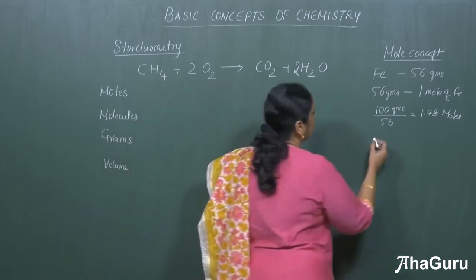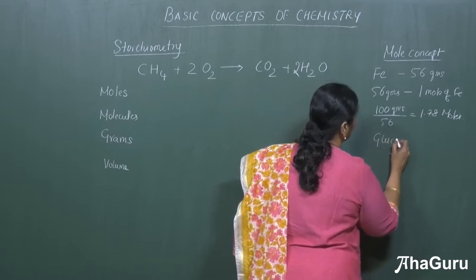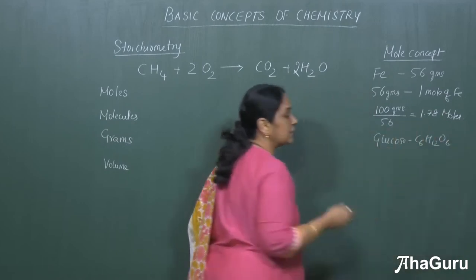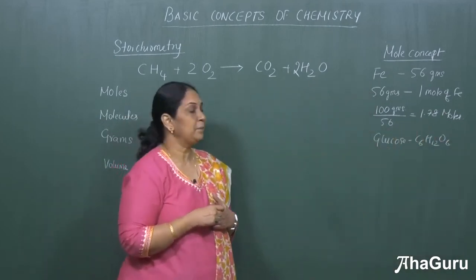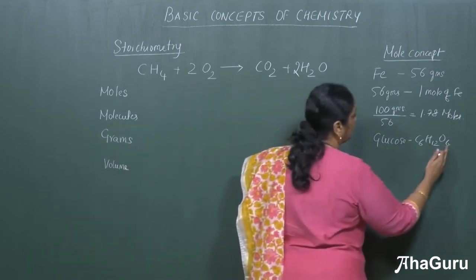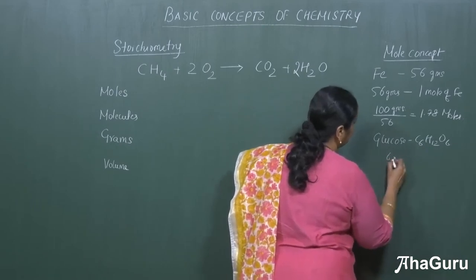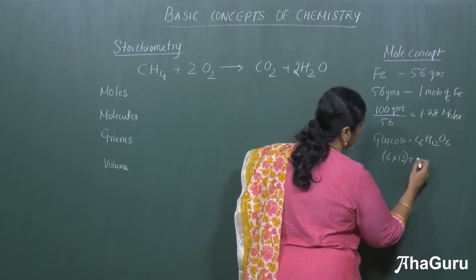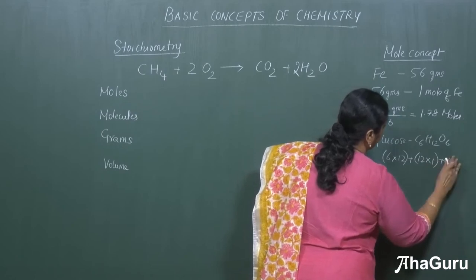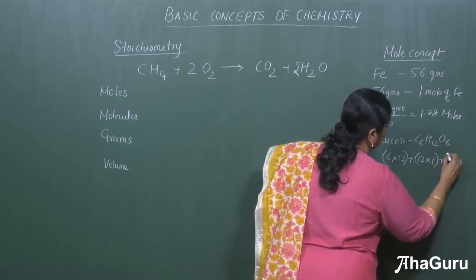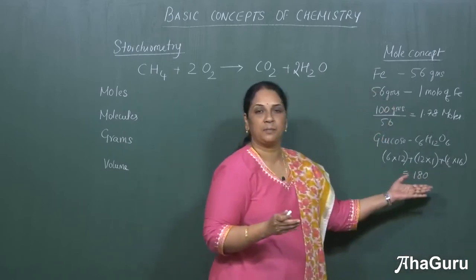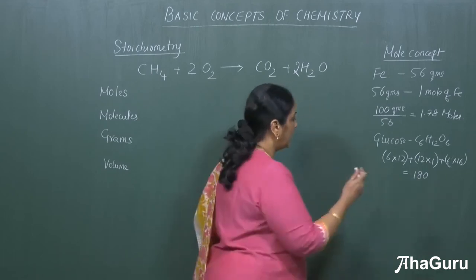Now let's take a compound — for example, glucose. The formula for glucose is C6H12O6. Since this is a compound or molecule, we first need to calculate its molecular weight. That is: 6 carbons × 12 = 72, plus 12 hydrogens × 1 = 12, plus 6 oxygens × 16 = 96. So the molecular weight of glucose is 180.